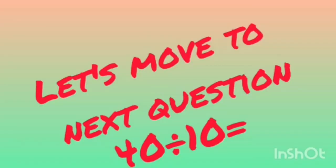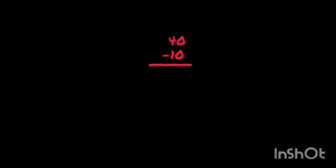Now we move to the next question: 40 divided by 10. For repeated subtraction, we subtract 10 from 40. 40 minus 10 is equal to 30. Again we subtract 10 from 30. 30 minus 10 is equal to 20.